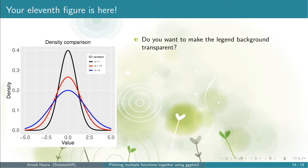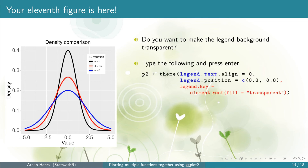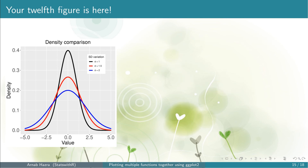Note that the backgrounds of the legend keys are grey and you might want to make the background transparent. If you don't want to do this, you can skip this step. To do that, within theme, add the line legend.key = element_rect(fill = 'transparent'). You can see that the legend key backgrounds are transparent now.